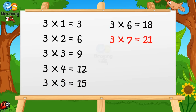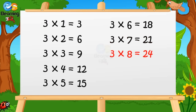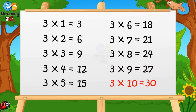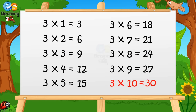Three sevens are twenty-one. Three eights are twenty-four. Three nines are twenty-seven. Three tens are thirty.